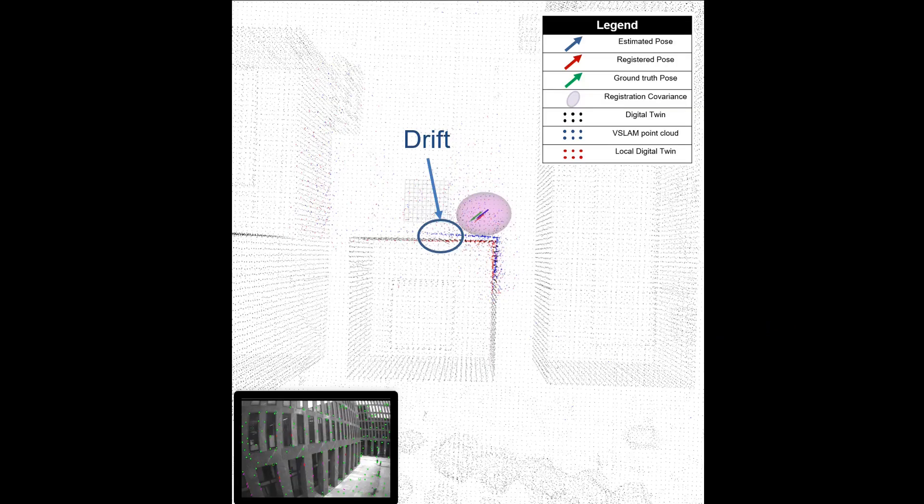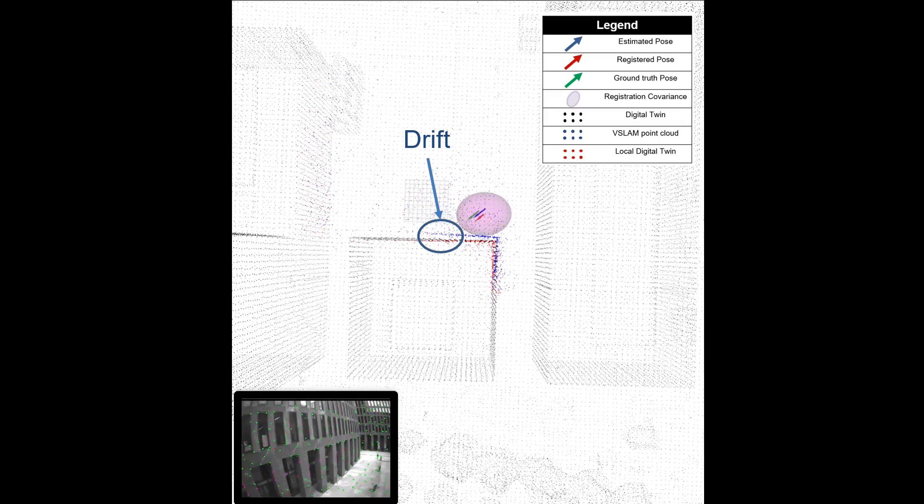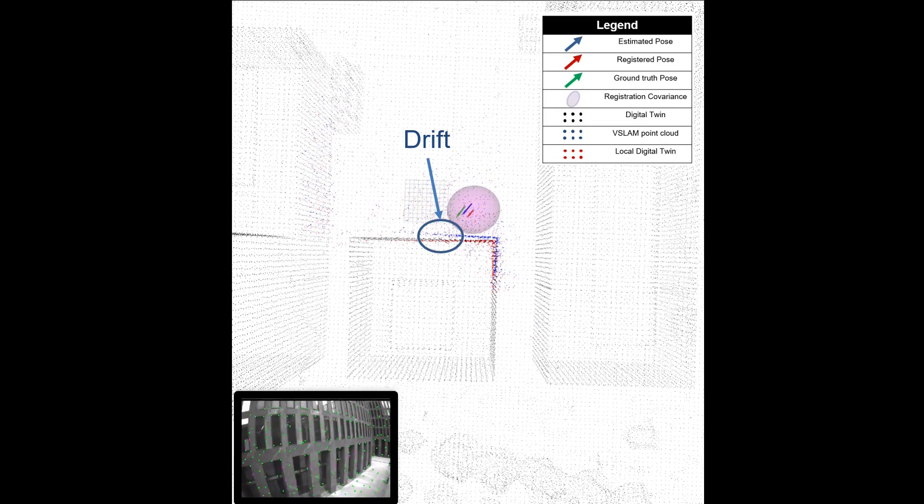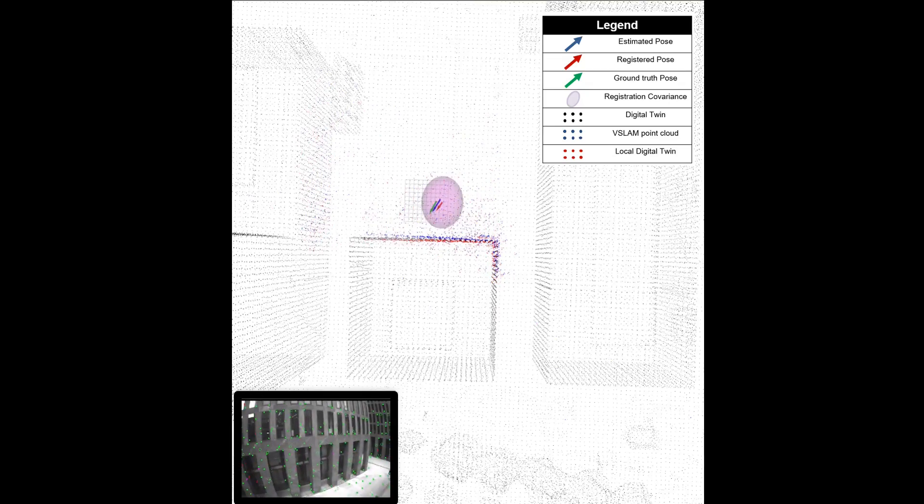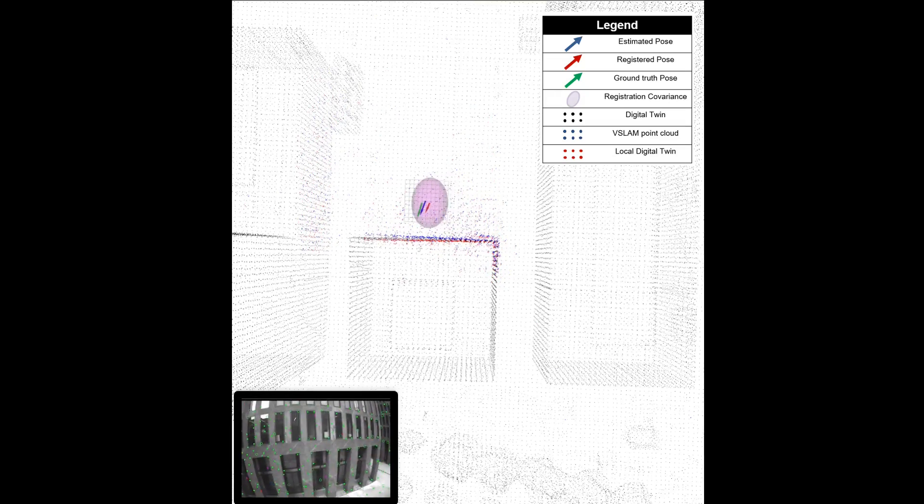Visual SLAM systems accumulate drift over time. Our method minimizes the drift by aligning the local sparse 3D point cloud to a digital twin using point-to-plane matching. This means that no visual data association is needed.